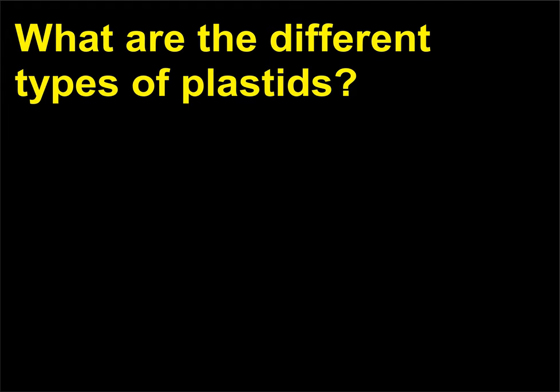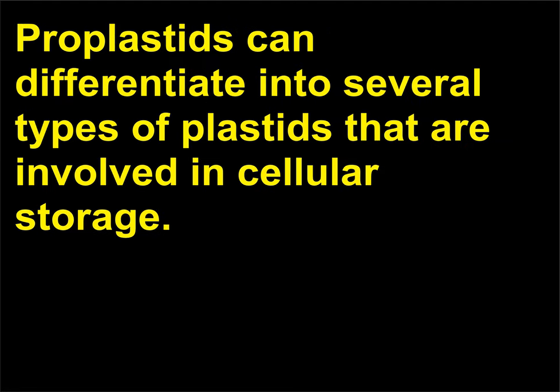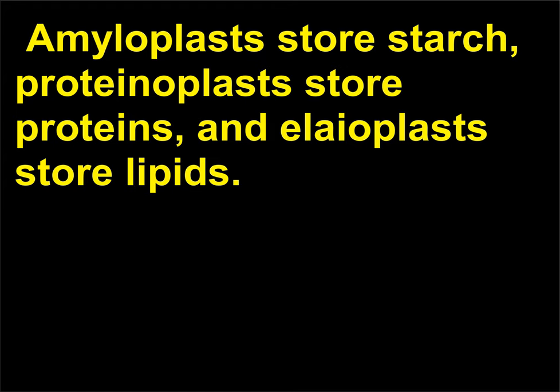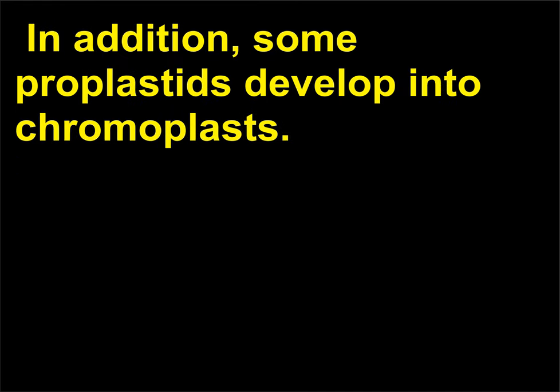What are the different types of plastids? Proplastids can differentiate into several types of plastids that are involved in cellular storage. Amyloplasts store starch, protonoplasts store proteins, and aleoplasts store lipids. In addition, some proplastids develop into chromoplasts.